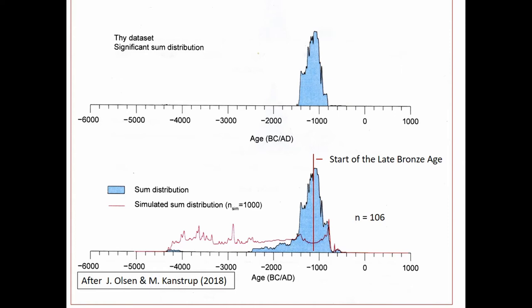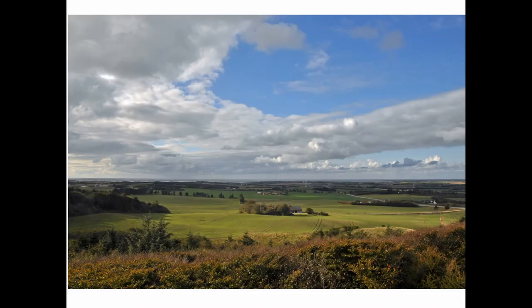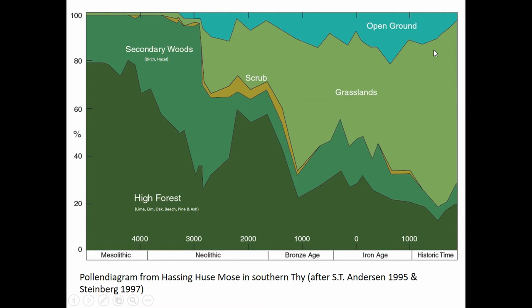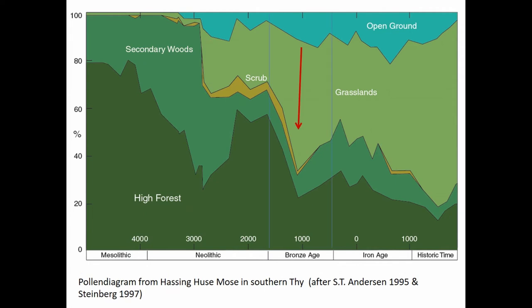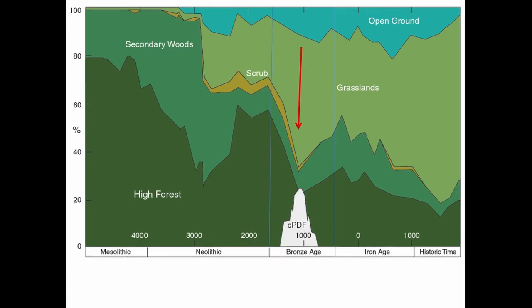To get an idea of the landscape I'm talking about, I'll show you one picture from today's undulating cultivated morainic landscape inland in Thy, with the North Sea in the background. This regional pollen diagram is the best-dated from Thy, and clearly shows the first very dramatic cut in the percentage of wooded areas, which happened during the single grave culture about 1,000 years after the start of the Neolithic — a development further accelerated during the Middle Bronze Age, where there is a perfect fit with the sum distribution presented before, linking an increase in Bronze Age house building activity with the development in the vegetation.